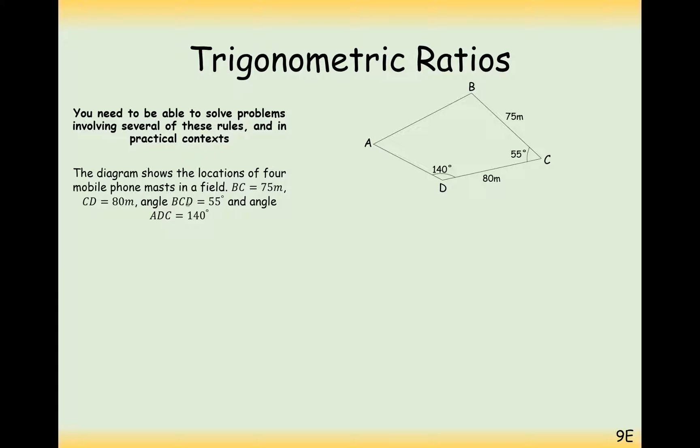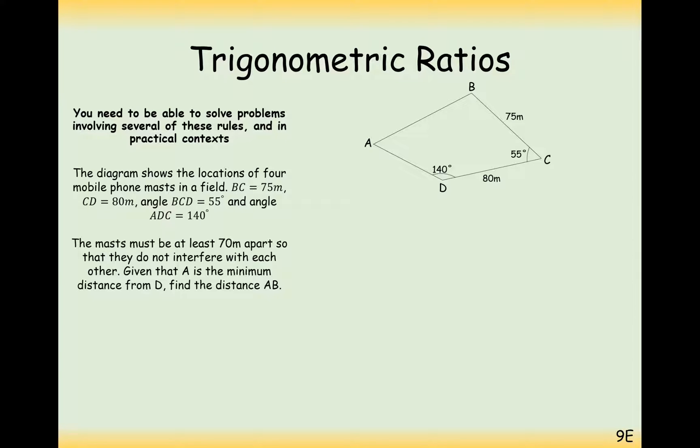The diagram shows the location of four phone masts in a field. BC is 75 metres, CD is 80 metres, angle BCD is 55 degrees, and angle ADC is 140 degrees. The question is, the maths must be at least 70 metres apart so they don't interfere with each other. Given that A is the minimum distance from D, find the distance AB. So sketch that 70 metres onto your diagram because it's at a minimum distance here.